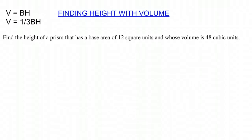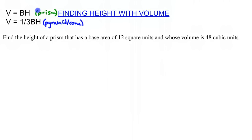Hello, today we're going to work on finding the height when given the volume. We have two equations: V equals base area times height, which is for prisms, and V equals one-third base area times height, which is for pyramids and cones — anything that ends in an apex. So we have the question: find the height of a prism that has a base area of